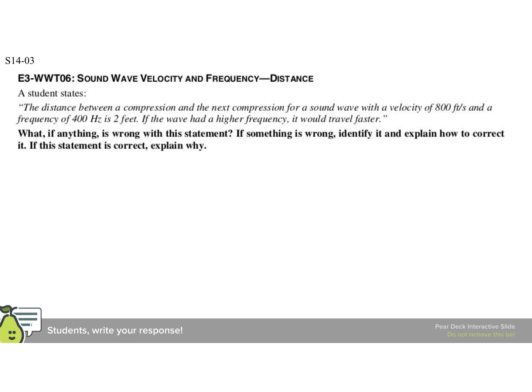All right. The distance between the compression and the next compression for a sound wave with a velocity of 800 feet per second and a frequency of 400 hertz is 2 feet. If the wave had had a higher frequency, it would travel faster. This is a statement by a student, and we want to criticize or compliment them on that. What if anything is wrong?